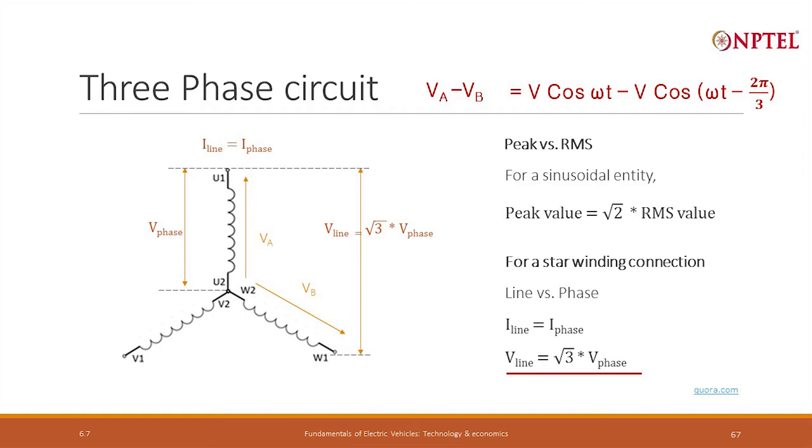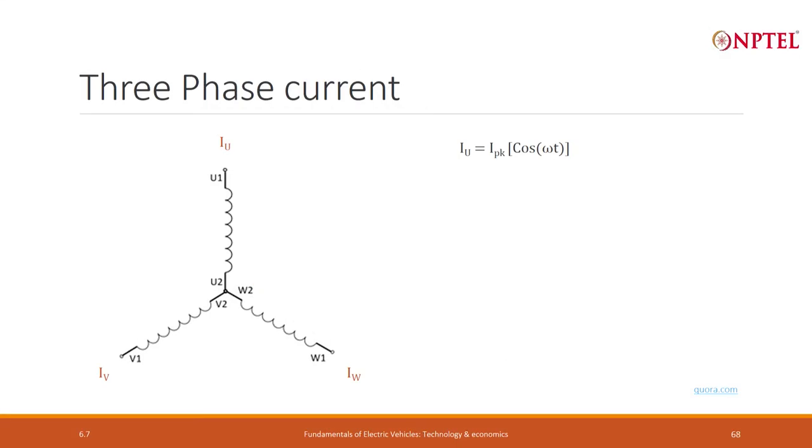Now let us look at the currents a little more carefully. The three phases are commonly represented as U, V, and W—they can also be described as A, B, C or lowercase a, b, c. These are different conventions. If the U phase current is represented by ωt, then V and W are 120 and 240 degrees apart. The interesting thing is if you add all of these, you can expand them trigonometrically. But without doing all that, you can just look at Kirchhoff's law and say that the total current should be 0, and you will get the value to be 0 when you expand it.